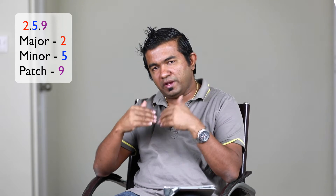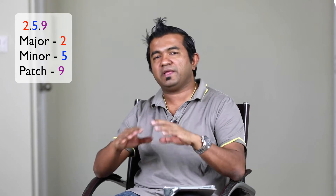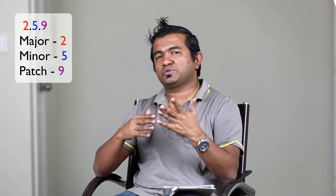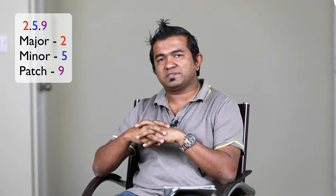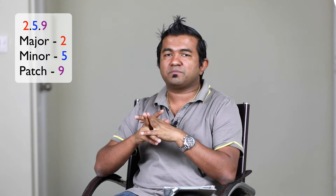The minor version number increments whenever you have new functionality. However, the previous functionalities will remain as they are. That means if a user wants, they can update; otherwise, the user can still consume the previous version. The patch version you can increment however you want — it doesn't reflect anything too serious.